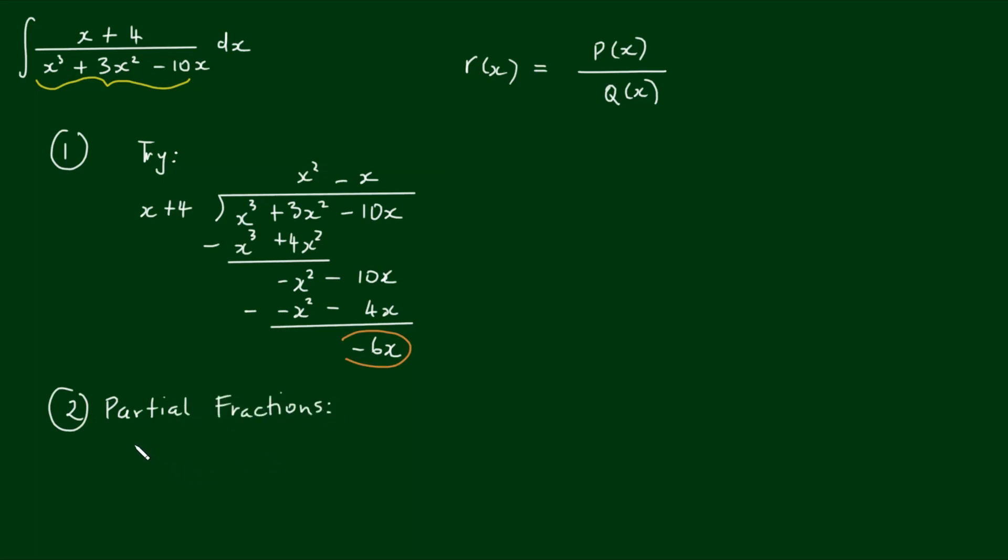I'm going to try and factorize the denominator, x cubed plus 3x squared minus 10x. The first thing I note is that I can factorize out an x. If I take an x out, I'm left with x squared plus 3x minus 10.